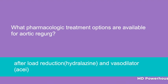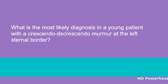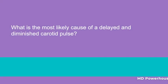What is the most likely diagnosis in a young patient with a crescendo-decrescendo murmur at the left sternal border? What is the most likely cause of a delayed and diminished carotid pulse?